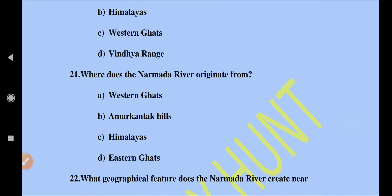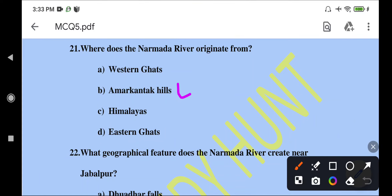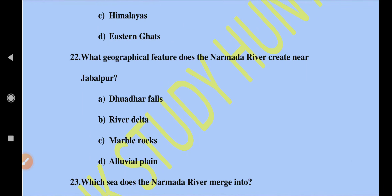Where does the Narmada River originate from? The Narmada River originates from the Amarkantak Hills in the Maikal Range in Madhya Pradesh. Question 22: what geographical feature does the Narmada River create near Jabalpur? The Narmada River creates a notable geographical feature near Jabalpur known as the Dhuandhar Falls.